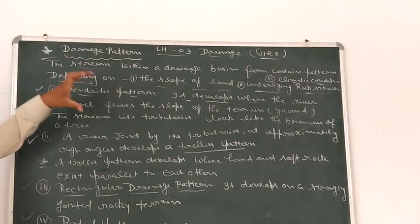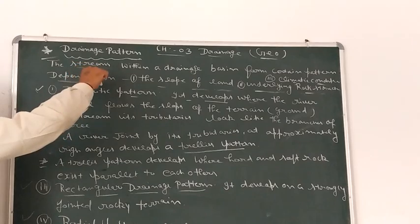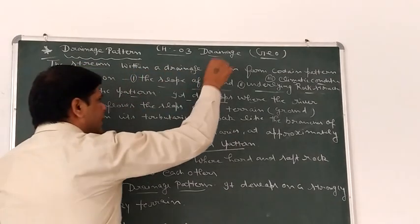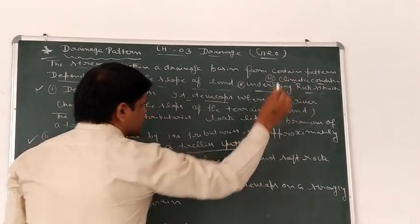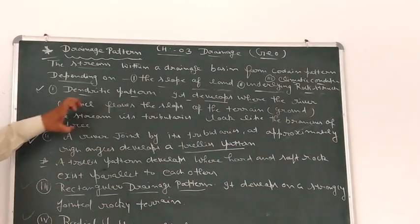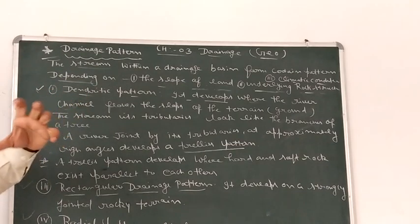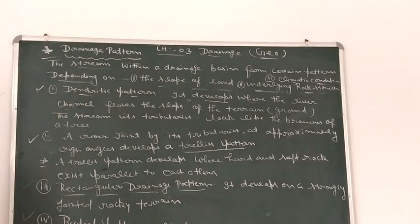All these determine which type of pattern is formed by a river. These are the three factors on which drainage patterns mainly depend. The slope of land, underlying rock structure, and climatic condition. These are most important and you must remember them.